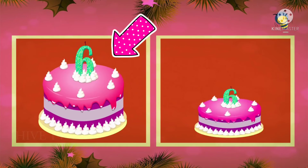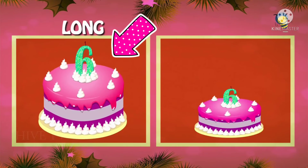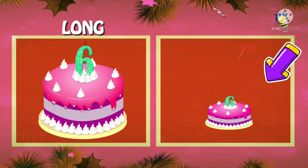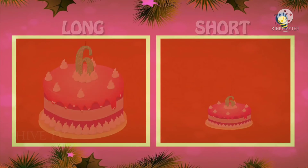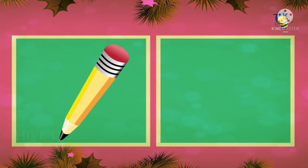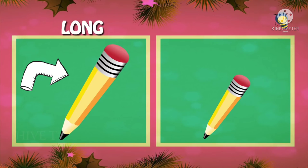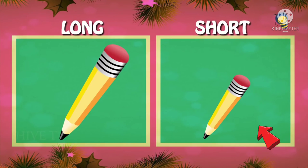We have a yummy cake with six candles. This cake is long and this cake is short. Very intelligent students! Now pencils — which is long? Tell me, tell me. Very good — this is long and this is short.